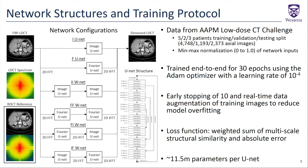Each of the six network configurations were trained end-to-end over 30 epochs using the Adam optimizer and a constant learning rate of 10 to the negative four. We used early stopping of 10 and real-time data augmentation by applying affine transforms on the training images to reduce model overfitting. We used a perceptual loss function, which was a weighted sum of multi-scale structural similarity and absolute error, computed in the respective domains on which the networks operated.